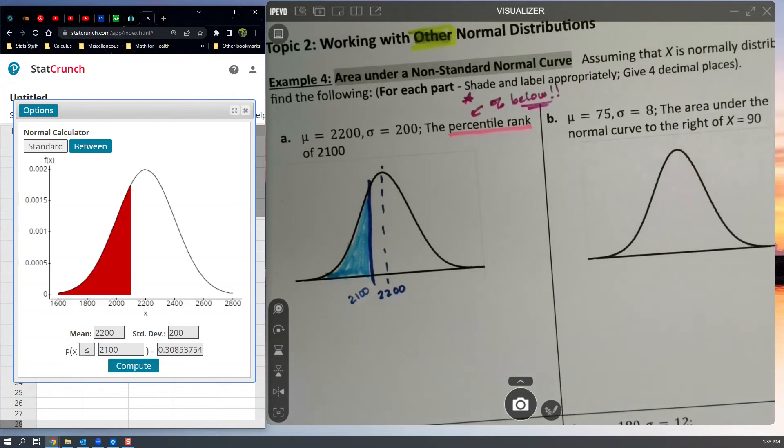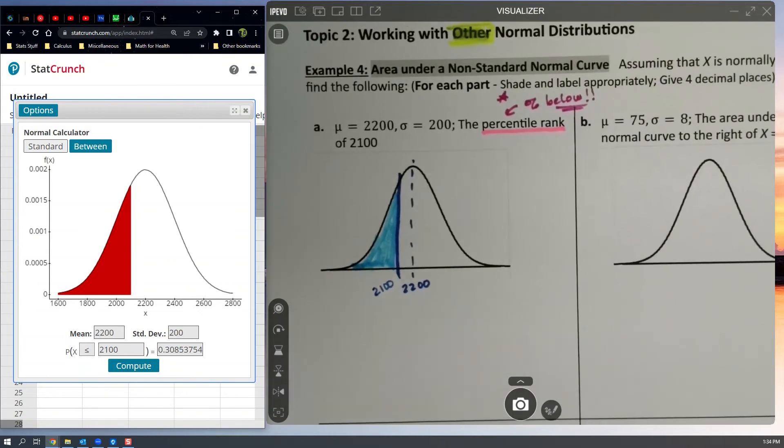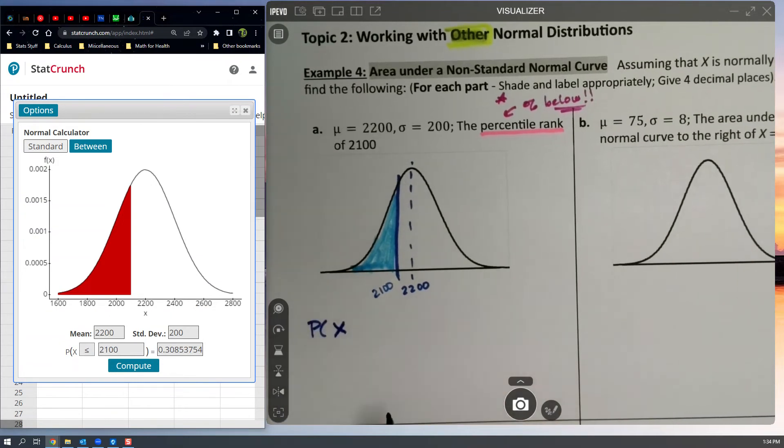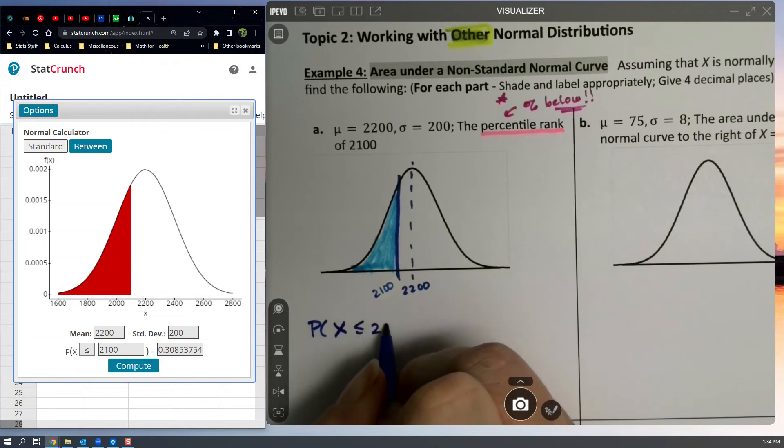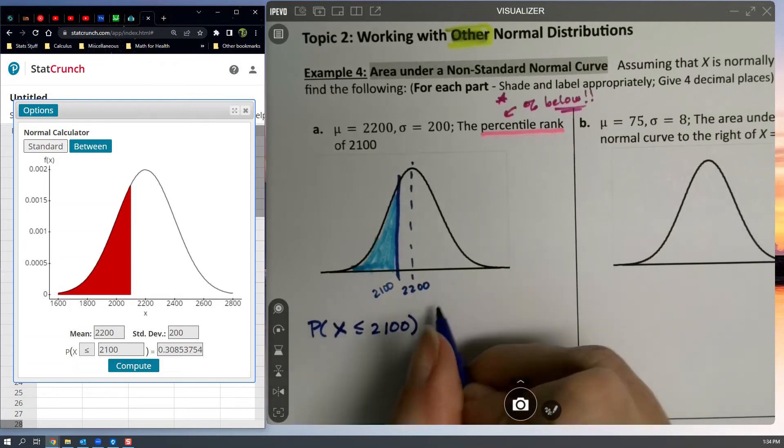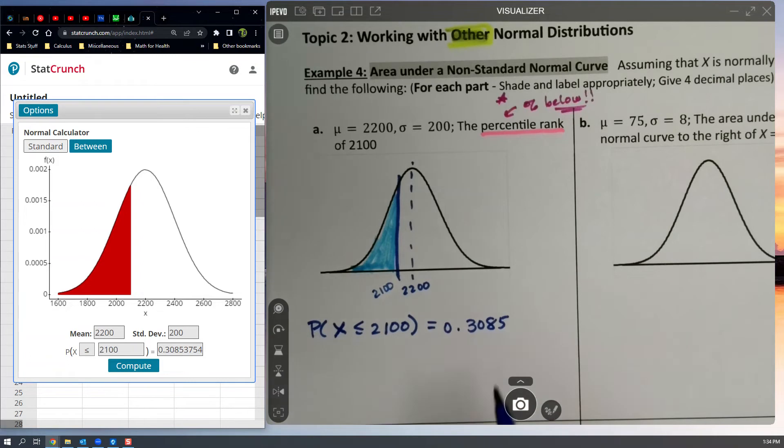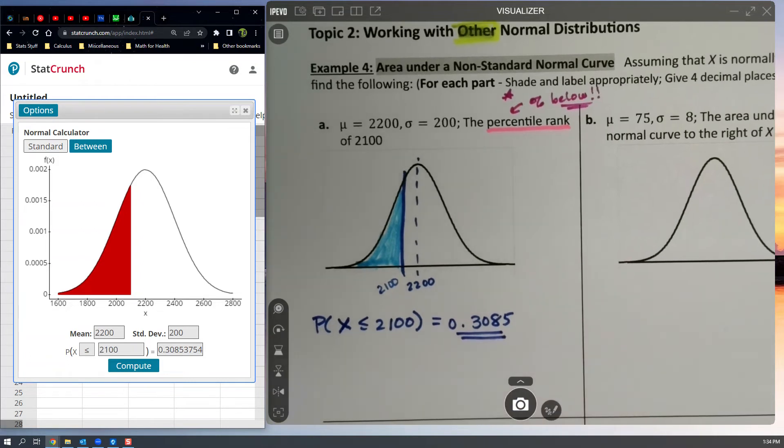And notice the graph it's creating matches the graph that I've got, which is great. It's working out like I think it should. So probability that x is, and this time it is an x, it's not a z, is less than 2100, is 0.3085. Which should look familiar to you, because we already ran into that probability. That's the giraffe probability from the end of Section 7.1.